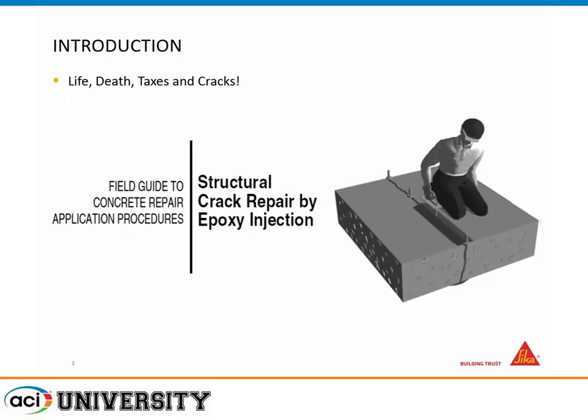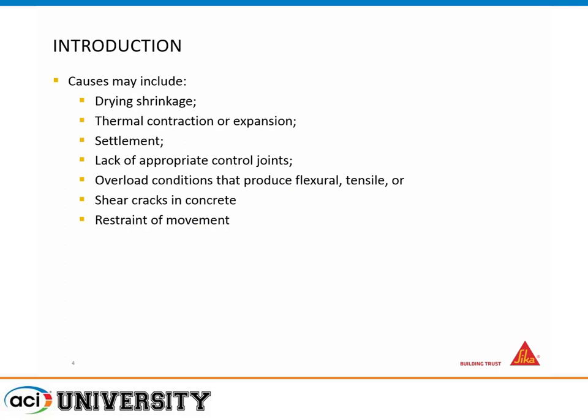The tagline for a lot of the crack repair documents is: life, death, taxes, and cracks — they're all inevitable. So what are some of the causes of cracks in structural concrete? Some of the main ones include drying shrinkage, thermal contraction and expansion, freeze-thaw, settlement, lack of appropriate joints, misdesign from the get-go, or overloading in many conditions. It could be compressive, tensile, flexural, shear cracks, or even a restraint in movement — that also comes back to the original design.